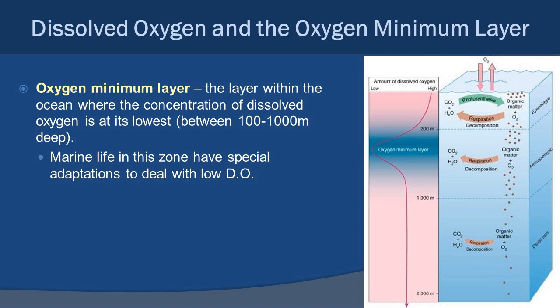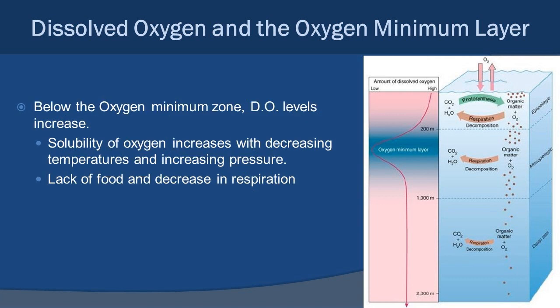Most of the organisms found here are fairly inactive, which reduces their need for oxygen. The gills of fish in this area are incredibly efficient at extracting oxygen from water even at the low levels present at this layer. Additionally, some organisms here have a very oxygen-efficient form of hemoglobin — that blood protein responsible for carrying oxygen throughout the body.